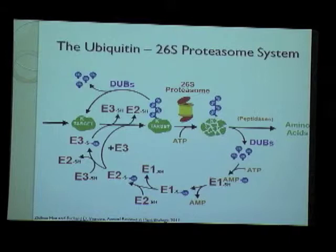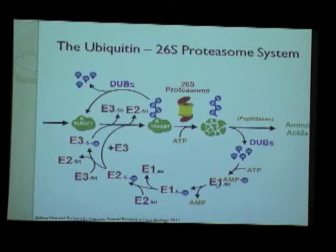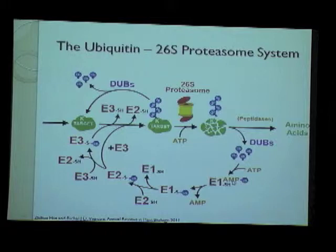The system we are working on is the ubiquitin 26S proteasome system, one of the major ways a cell regulates its protein levels. In this pathway, the first step is activation of ubiquitin by an E1 enzyme — the ubiquitin activating enzyme — which is the only step requiring ATP. The ubiquitin moiety first binds to AMP as ATP degrades, then forms a thioester bond between the E1 enzyme and the ubiquitin molecule.